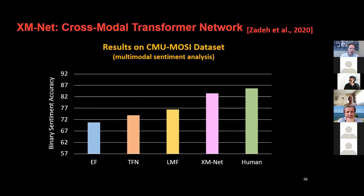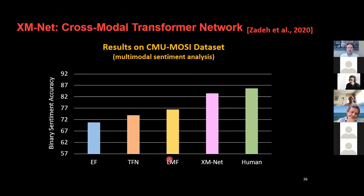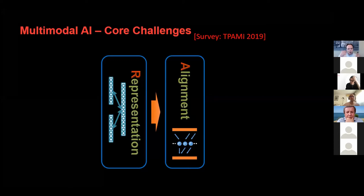When you do this on a popular benchmark like multimodal sentiment analysis, early fusion using the tensor — giving unimodal, bimodal, and trimodal — combined with a low-rank version of the tensor, and when you also do alignment at the same time, you get much closer to human performance.